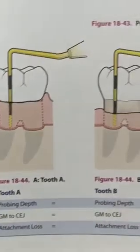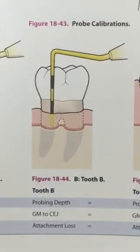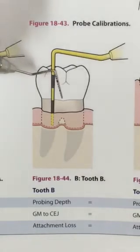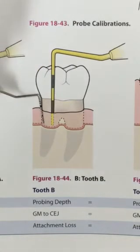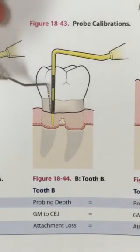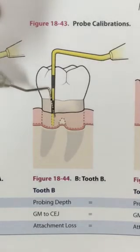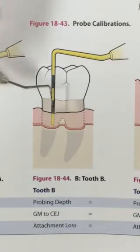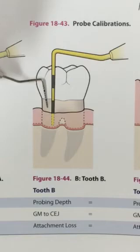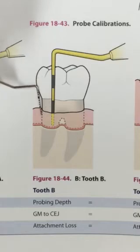In the case of recession, we're still looking from the CEJ to the epithelial attachment, but we have to add. In this picture, you can see on this 3, 6, 9, 12 calibrated probe that the probe depth recorded is 3 millimeters. The recession recorded is also 3 millimeters. So the clinical attachment loss of this tooth would be 3 plus 3 — so 6 millimeters of attachment loss.